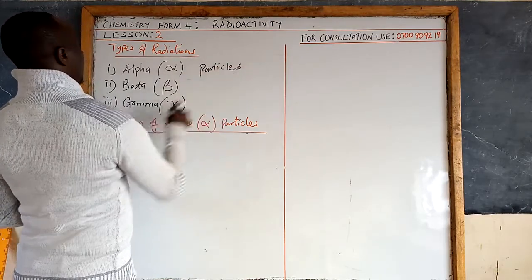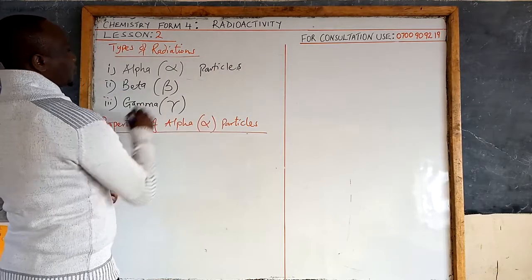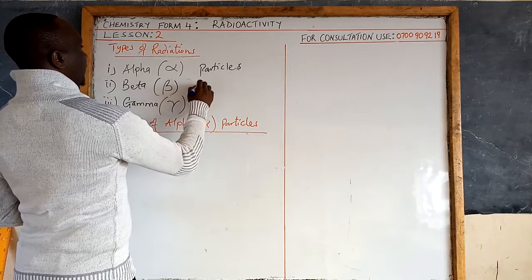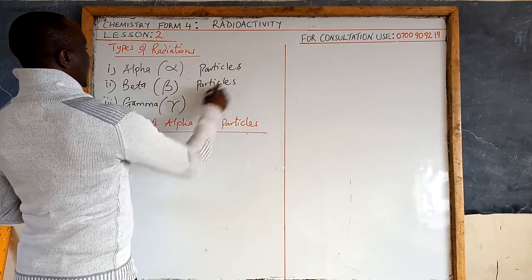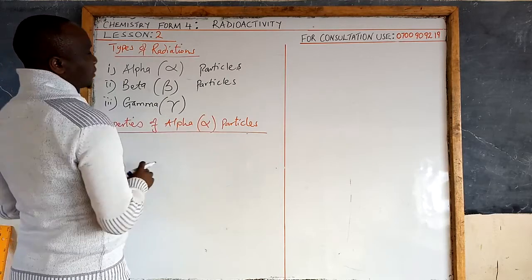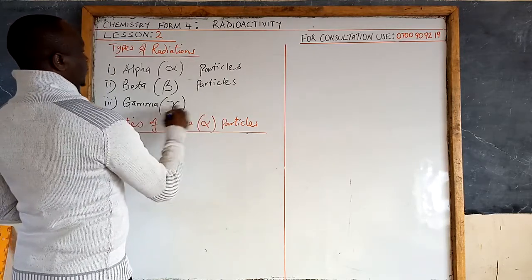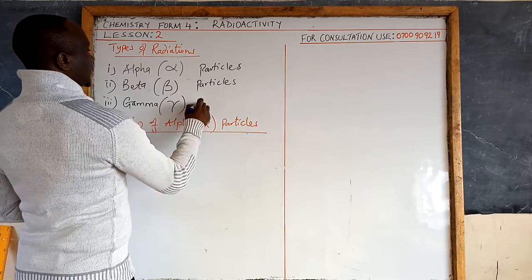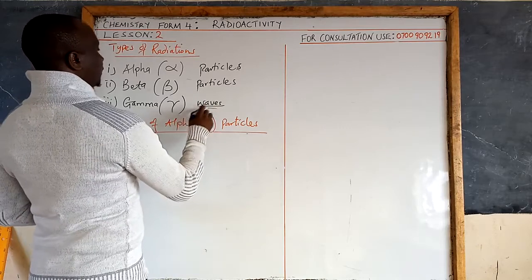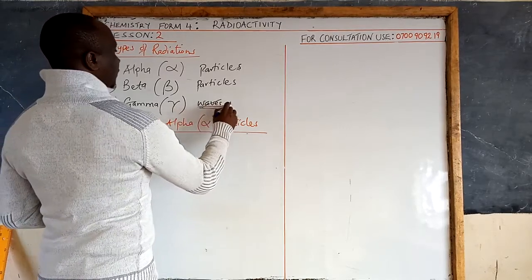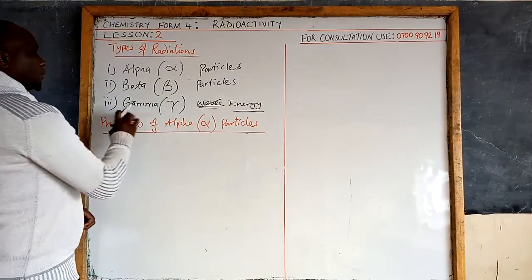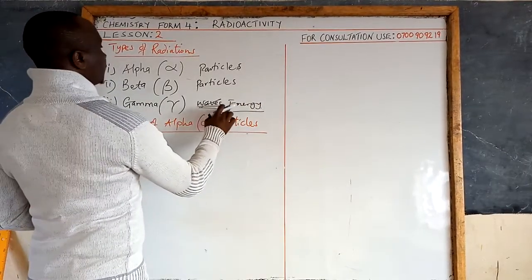Then we have another type, also particles, called beta particles. And then we have gamma rays. Gamma are not particles but a form of energy — waves, or what we can call energy. The gamma rays are in the form of energy.